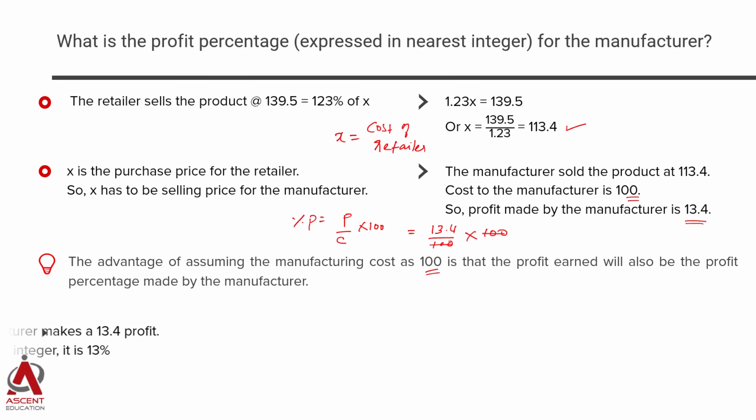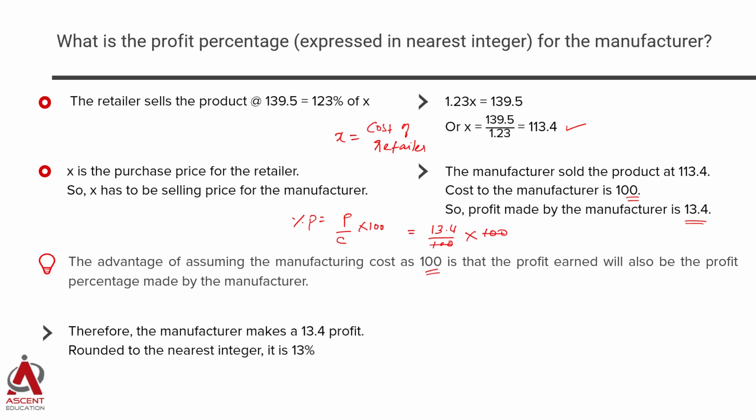So the profit made by the manufacturer, rounded to the integer, is 13%. Choice D is the correct answer.